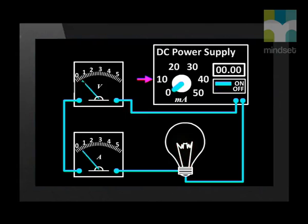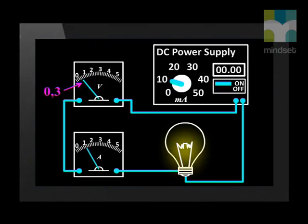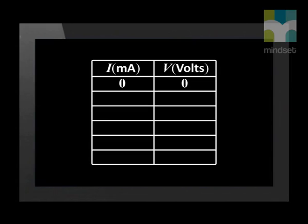I now switch the DC power supply on and adjust it so that it provides 10 milliamps. Now let's look at the voltmeter — the reading is 0.3 volts. I have set up a table to record the readings in this experiment. We fill in our first set of readings, with starting values of 0 for both the current and the potential difference.